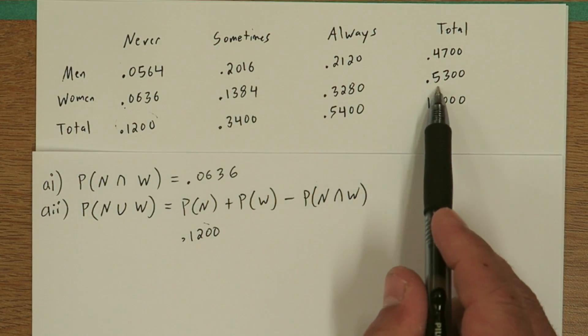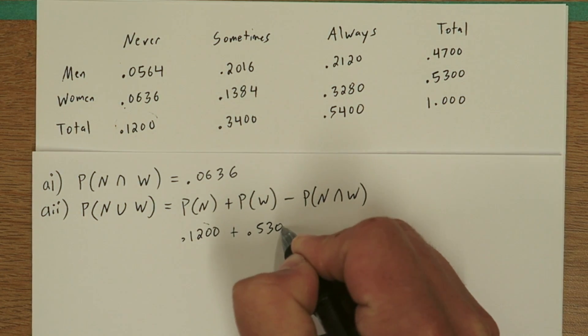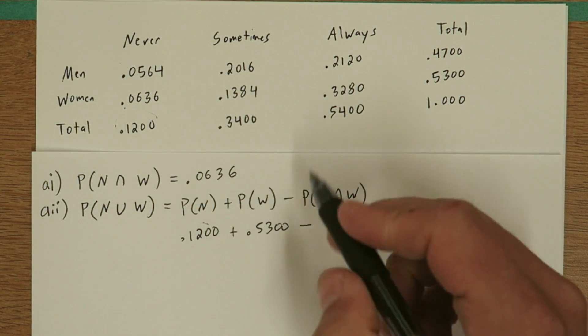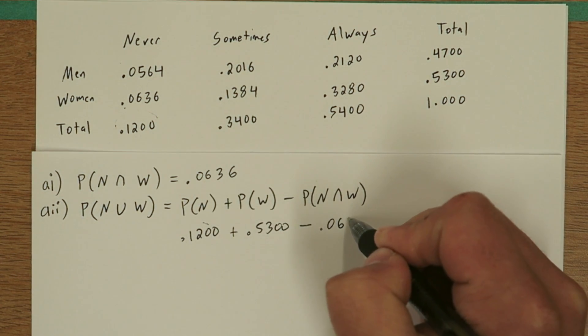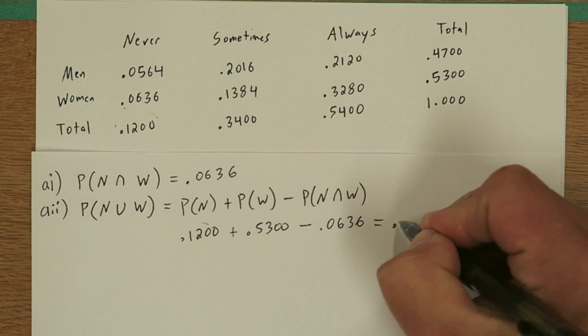Probability of woman, go right here to the total, is .5300. And now we have to subtract never and woman, which is .0636. When you do that arithmetic, you end up with .5864.